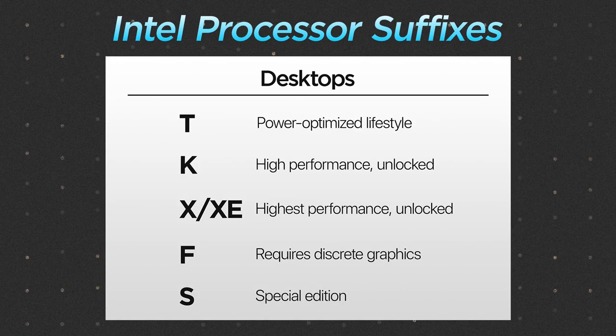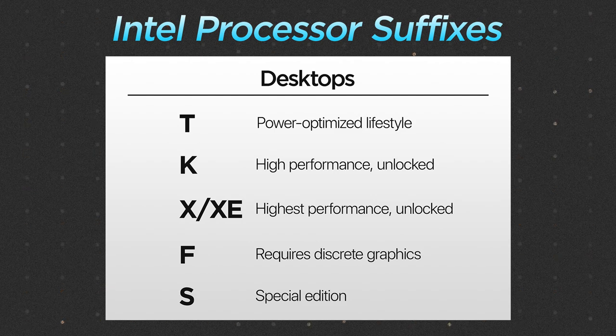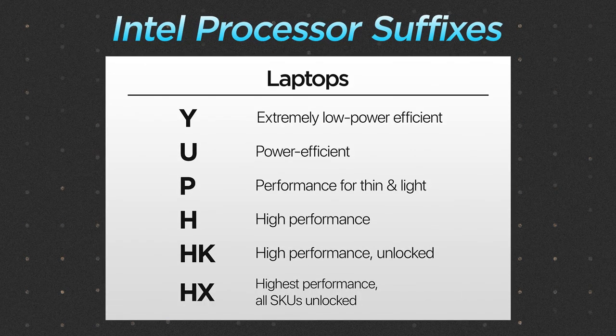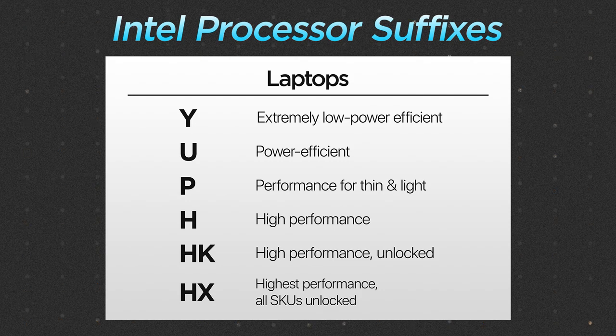Here are the suffixes you should note. Among desktop Intel Core processors: 'T' means power-optimized lifestyle, 'K' means high performance unlocked, and 'X' or 'XE' means the highest performance unlocked. In mobile chips or laptop processors, you'll usually see: 'Y' for extremely low power efficient chips, 'U' for power efficient chips, 'B' for performance in mostly thin and light laptops, 'H' for high performance, 'HK' for high performance unlocked, and 'HX' for highest performance with all SKUs unlocked. Now that we've got the nomenclature unlocked — pun not intended — let's move on to the specific Intel processors you can get in 2023.